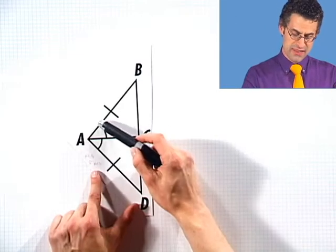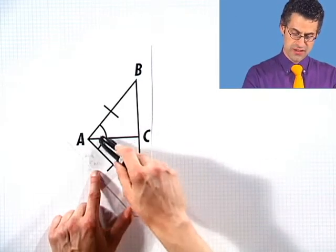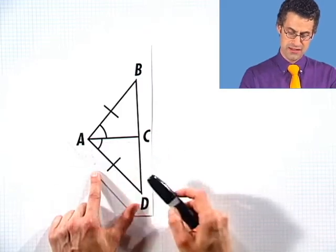For example, in this figure, we're given that this angle is congruent to this angle. That's what the one mark here and one mark here means.